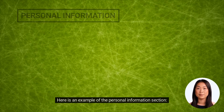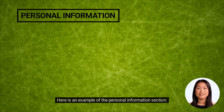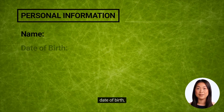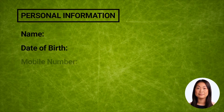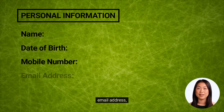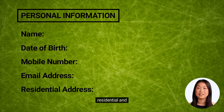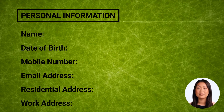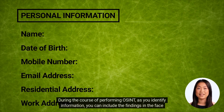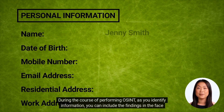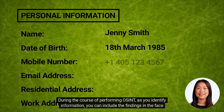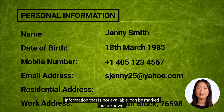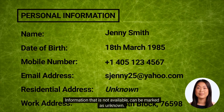Here is an example of the personal information section. You can have fields like name, date of birth, contact numbers, email address, residential and work address. During the course of performing OSINT, as you identify information, you can include the findings in the face sheet. Information that is not available can be marked as unknown.